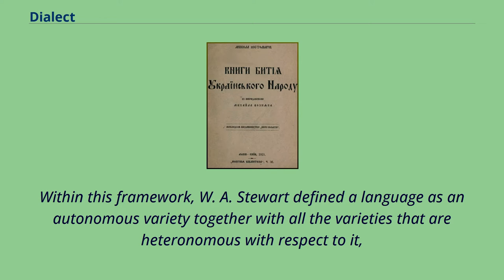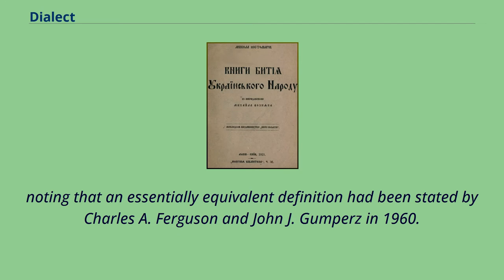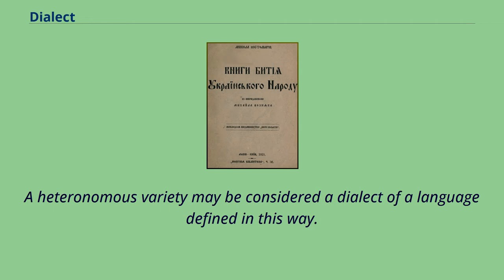Within this framework, W. A. Stewart defined a language as an autonomous variety together with all the varieties that are heteronymous with respect to it, noting that an essentially equivalent definition had been stated by Charles A. Ferguson and John J. Gumperz in 1960. A heteronymous variety may be considered a dialect of a language defined in this way.